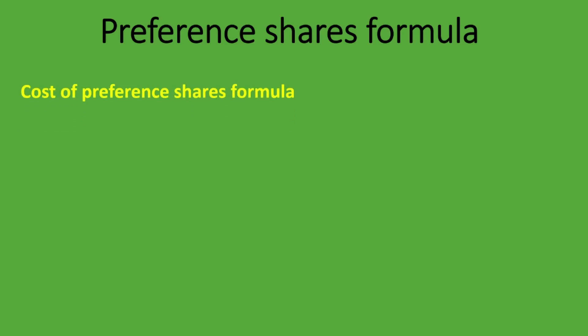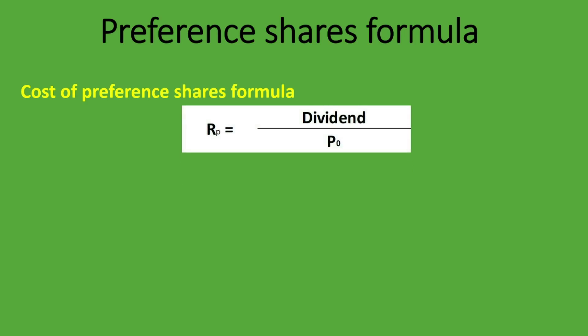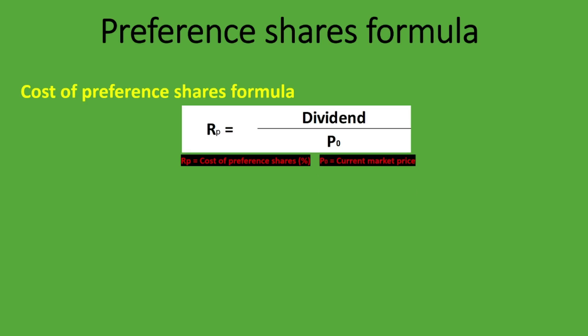There are two things we're going to look at: how to calculate the cost of preference shares, and how to calculate the market price of preference shares. The formula for the cost of preference shares is: Rp equals the dividend divided by the market price per share (P0). So you take the dividend per share divided by the current market price per share. We are looking at preference shares here, not ordinary shares.